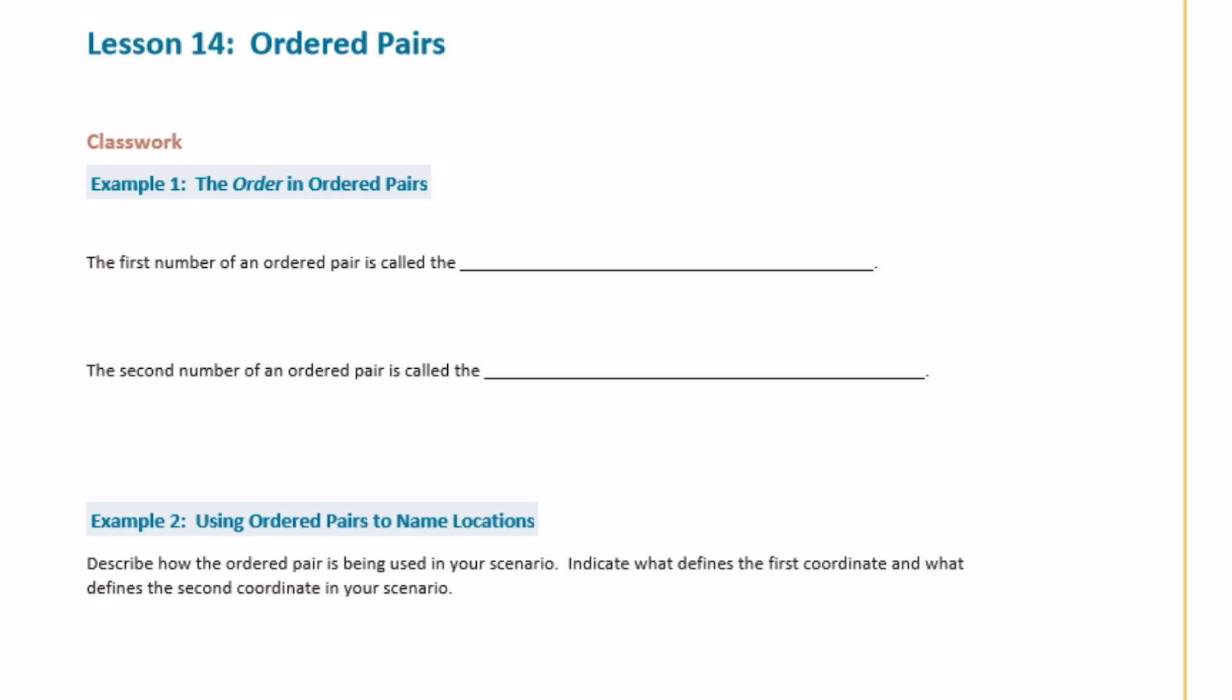Sixth grade, module 3, lesson 14, classwork. So this is going to expand on what we learned in fifth grade about ordered pairs. In fifth grade we just worked in the first quadrant, but now you're going to learn that there are actually four quadrants on a coordinate grid.